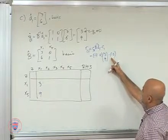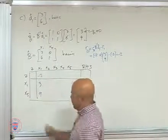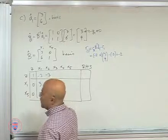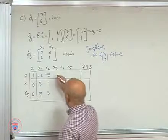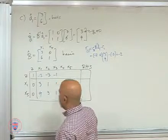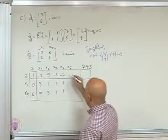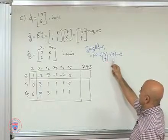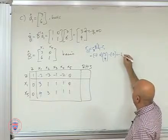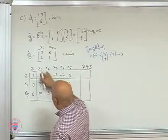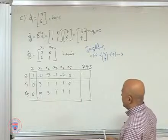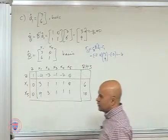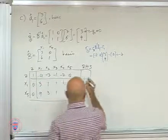How much is this? Minus 2 times 3 is minus 6, plus 2 is minus 4. And right-hand side value is still minus 12 here.